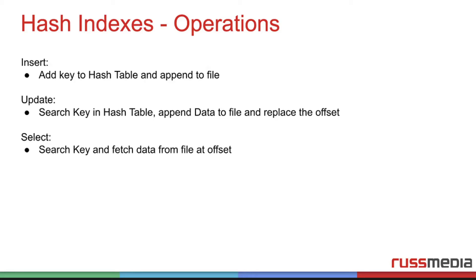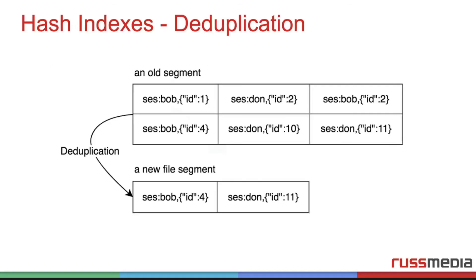But if you notice, if we only update by adding to this file, this file will get huge. So we create segment files after a certain amount — for example, after one megabyte of data we create a segment file. And now we have another problem: there will be duplicates in our old segment because every update creates a new key. For example, here we see Bob with ID one, but after some time we changed it to Bob with ID two, and so we have a lot of duplicates.